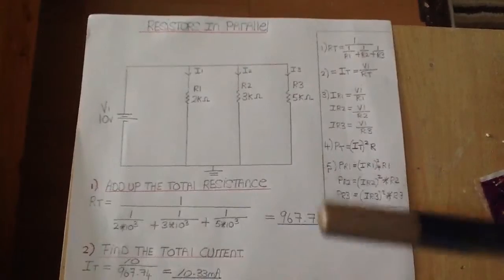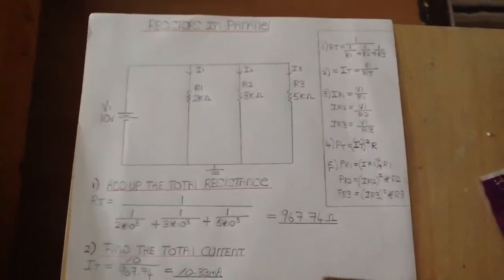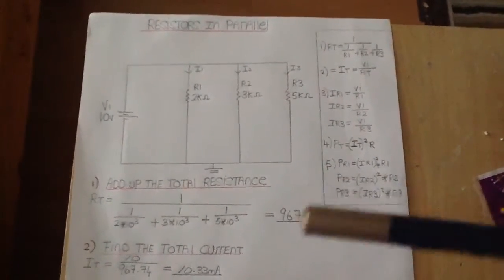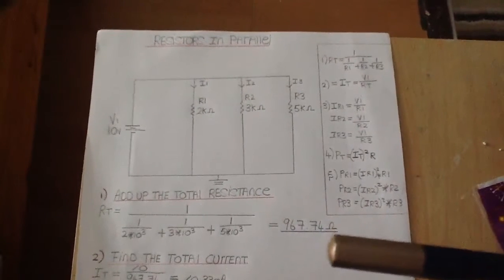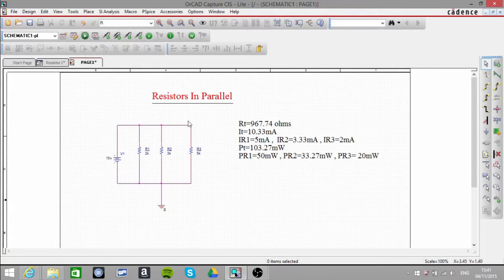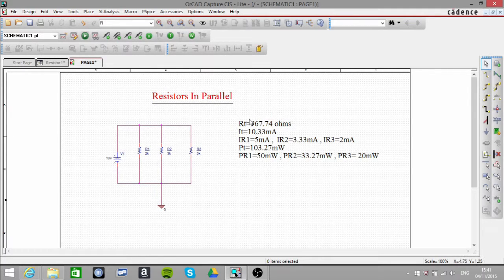This is the circuit, resistors in parallel. If I check now to see what the actual voltage is, I already mentioned that the voltage is going to be the same across each of the three resistors.